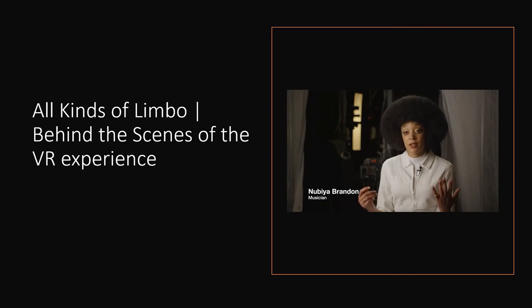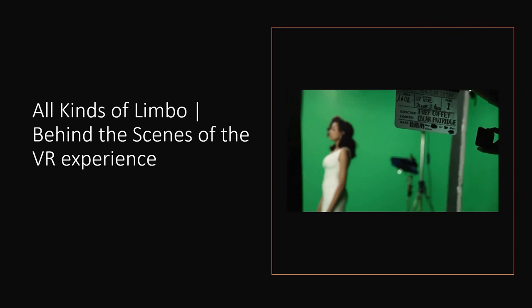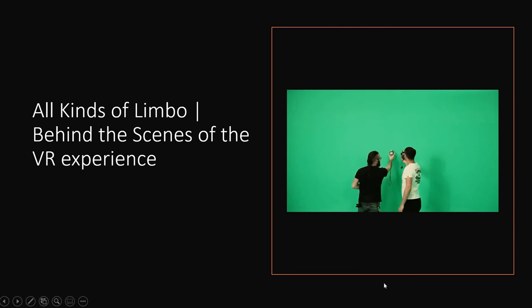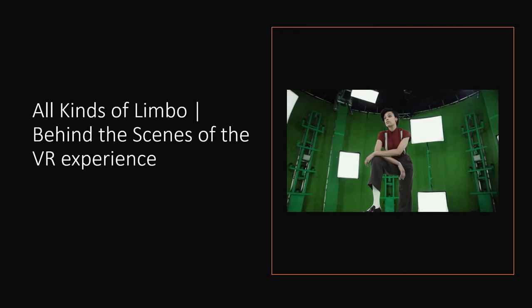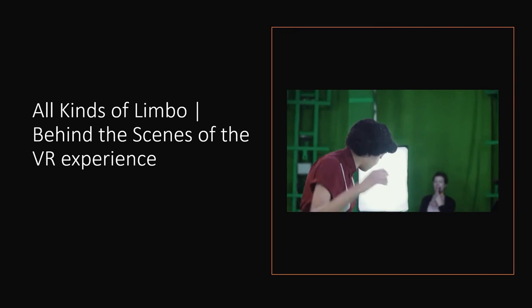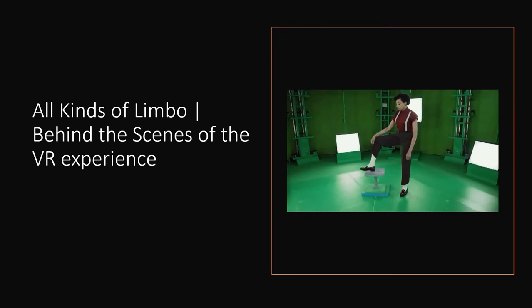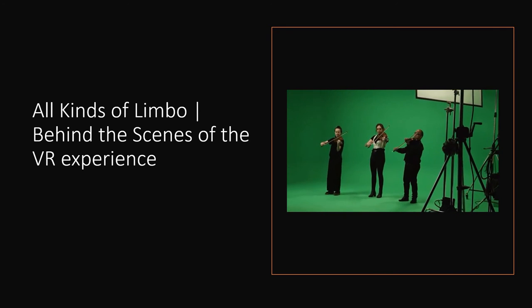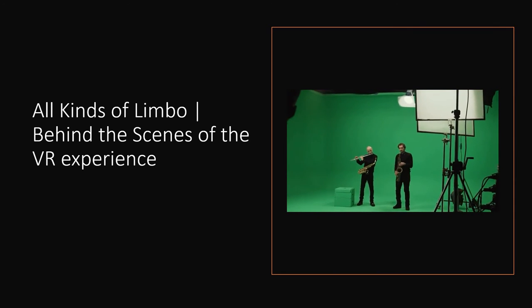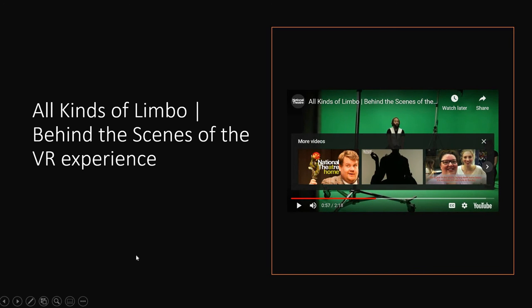Today we've been filming for the new VR experience 'All Kinds of Limbo' that we're doing at the National Theater. We've been filming each section of the song in a big green room where there are about 106 cameras, which is absolutely crazy. 'All Kinds of Limbo' is a collaboration with Accenture that comes from a provocation of the show 'Small Island.' It's a communal VR experience where the audience steps into the performance space with Nubia Brandin, the principal performer, and the orchestra. I want you to take away from this video how they're able to immerse and get the audience involved in the production, despite them not actually being in the same room.